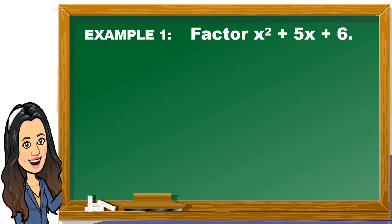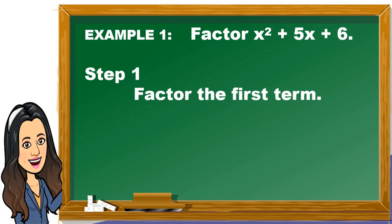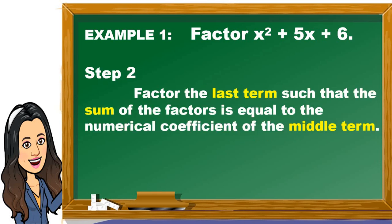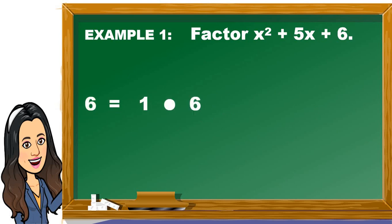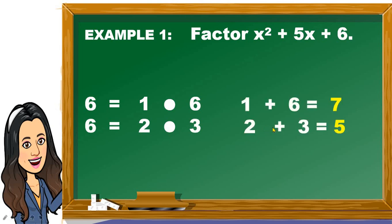Let us have an example. Factor x squared plus 5x plus 6. Step 1: factor the first term. The first term is x squared and the factors are x and x, because x times x equals x squared. Step 2: factor the last term such that the sum of the factors is equal to the numerical coefficient of the middle term. Our last term is 6. The factors of 6 are 1 and 6, or 2 and 3. 1 plus 6 is equal to 7 — is 7 equal to 5? No. 2 plus 3 is equal to 5 — is 5 equal to 5? Yes. So we're going to use 2 and 3 as factors of 6.